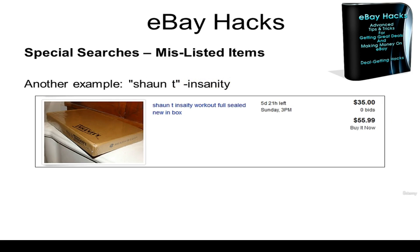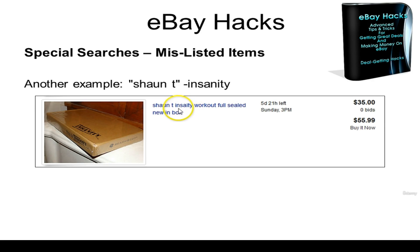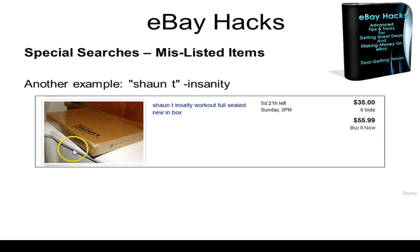When I typed 'Sean T minus Insanity,' it came up with a listing that said 'Sean T' but didn't say 'Insanity' — it said 'Insayity,' which is Insanity misspelled. This is actually a pretty good deal. If nobody places a bid at $55.99, you could probably flip this for $80 or $90 because it's brand new in the shrink wrap. This person basically blew it with their title — they misspelled the main keyword 'Insanity' and used 'Sean T' as their first keyword.